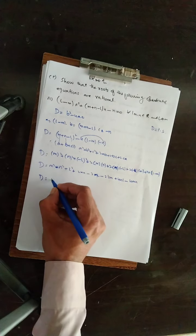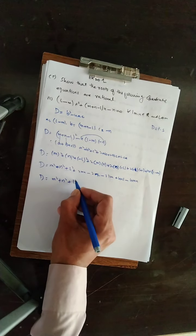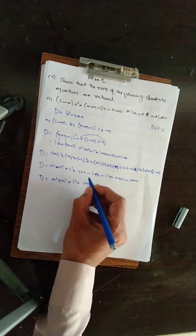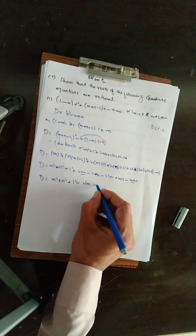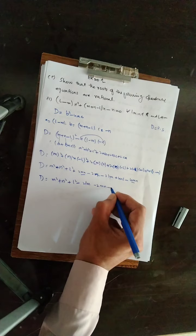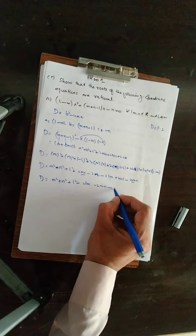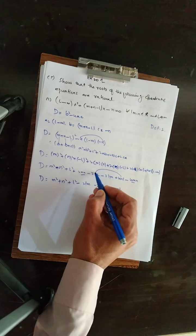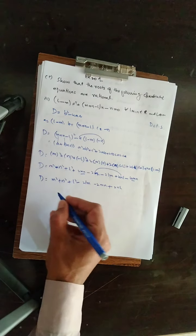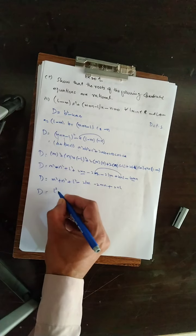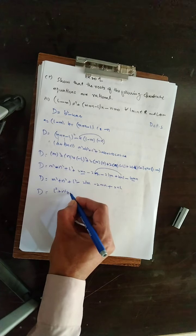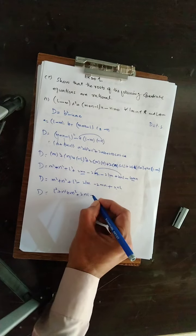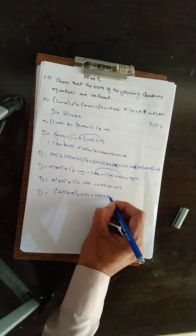D میں: M² same، N² same، L² same رہیں گے۔ minus 2LM same رہے گا۔ 2MN میں سے 4MN، minus کے 2MN بچیں گے۔ 4NL میں سے 2NL minus کریں گے تو plus کے 2NL بچیں گے۔ ترتیب: L² + N² + M² + 2NL - 2LM - 2MN۔